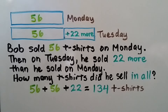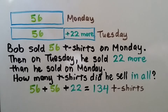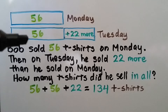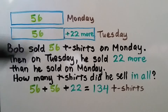Bob sold 56 t-shirts on Monday. Then on Tuesday he sold 22 more than he sold on Monday. We can make a bar for 56 for the amount he sold on Monday. It says on Tuesday he sold 22 more than he sold on Monday, so that means we have the same amount — the 56 — plus 22 more.